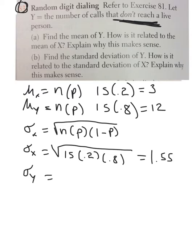So, if you think about it, standard deviation of Y is going to be the same thing, because we have 15 in our sample. This time we say, what's the probability that you don't reach a live person, and you've got to subtract 1, so you get that. So you get the same thing, and it is 1.55.